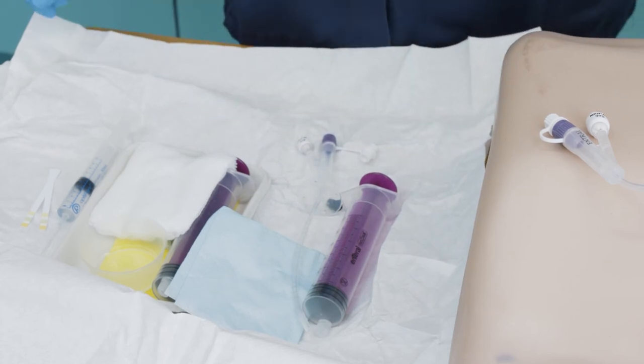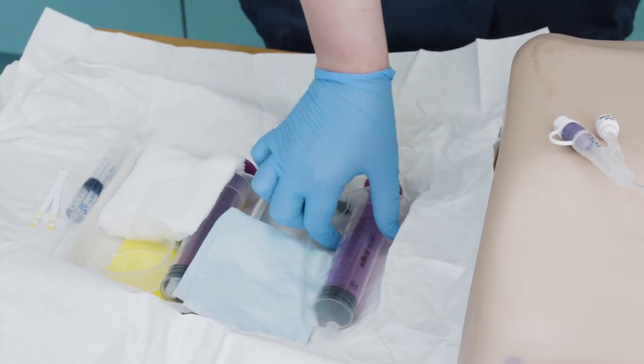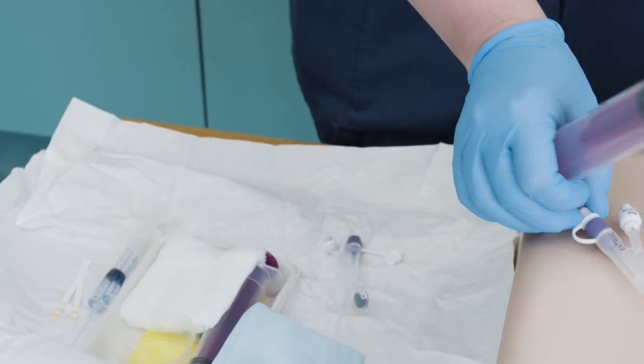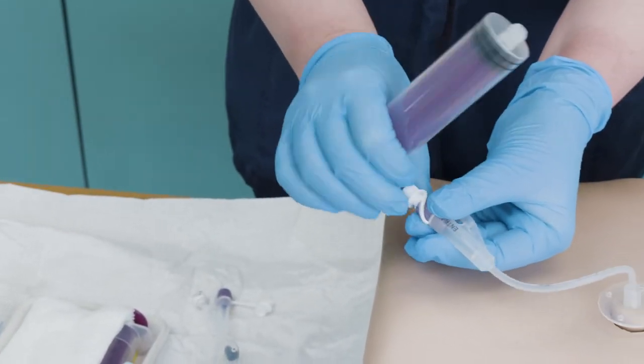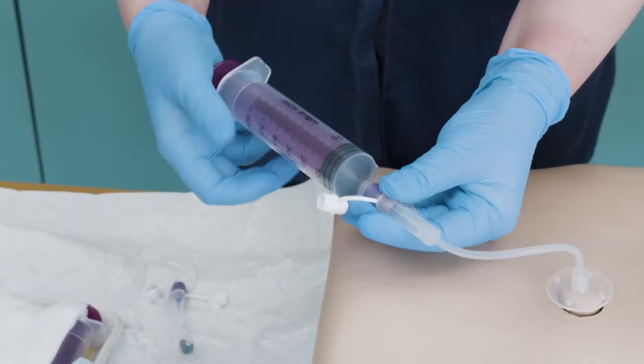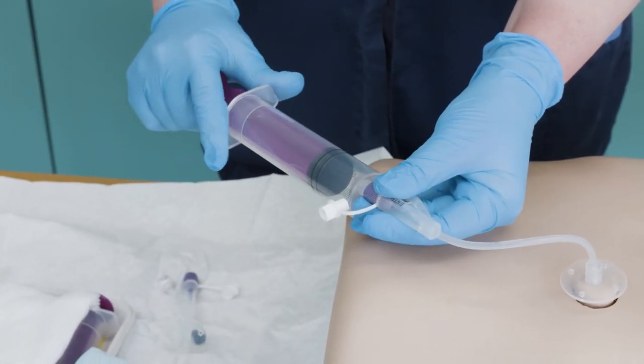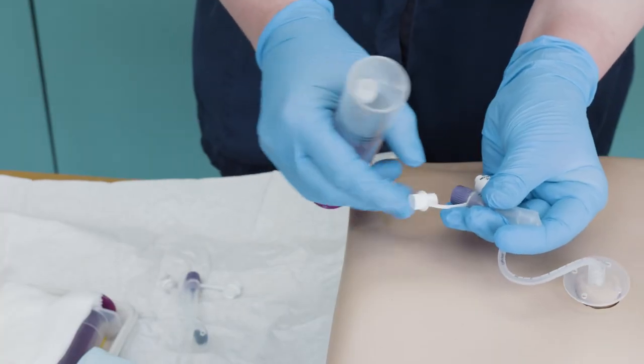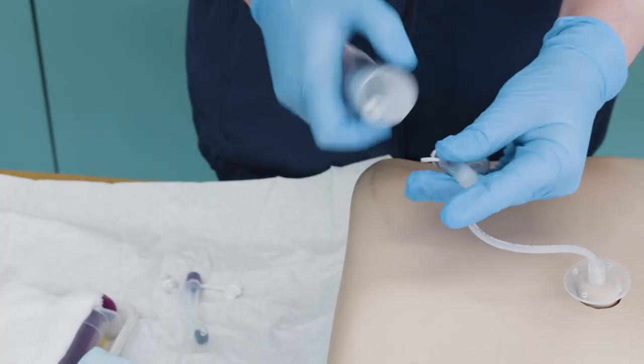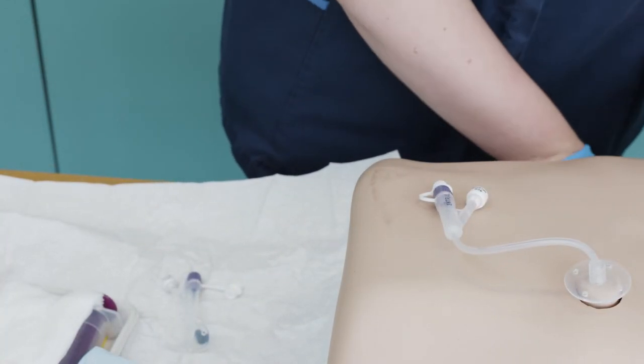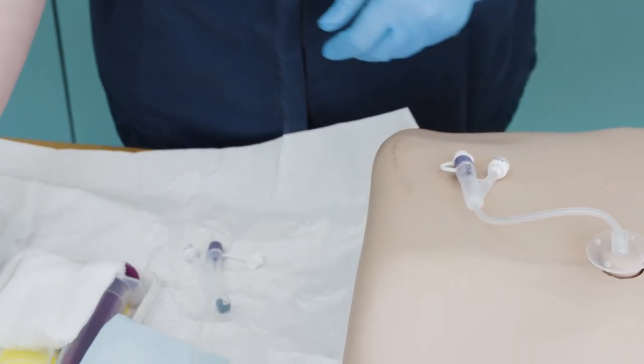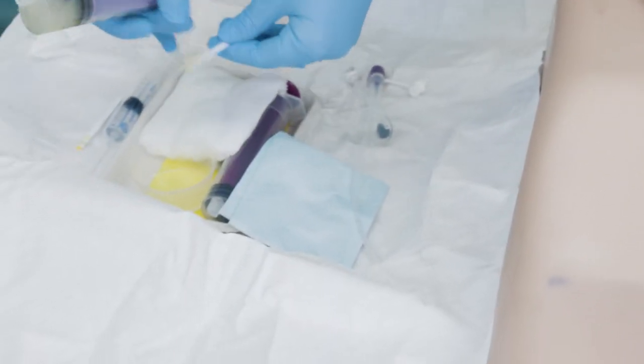If the existing tube is still in place, use a 60ml enteral Enfit syringe to test the position of the gastrostomy tube by aspirating gastric fluid and testing that it is 5.5 or below on CE marked pH paper. Remember to wait the recommended time as stated on the pH paper instructions.